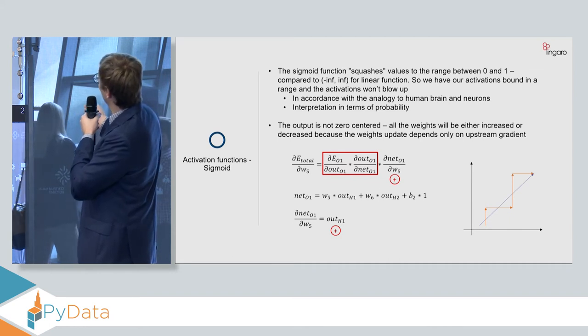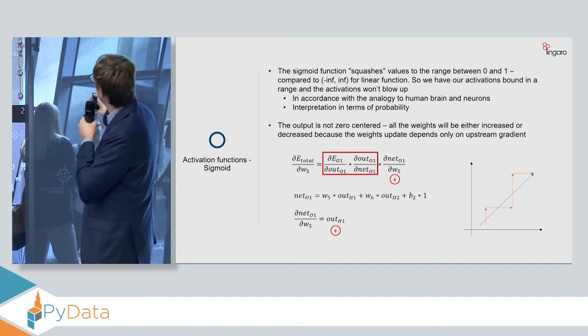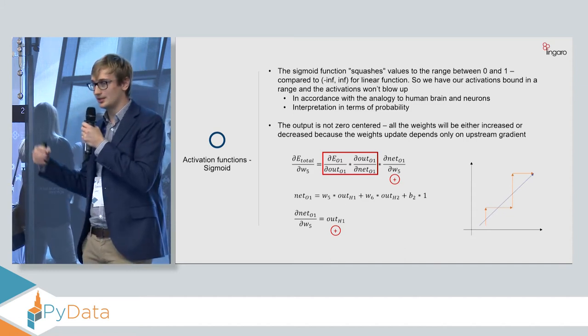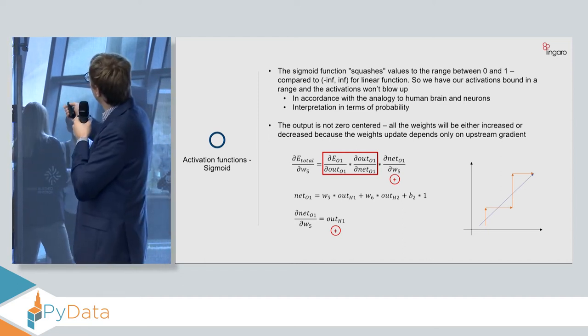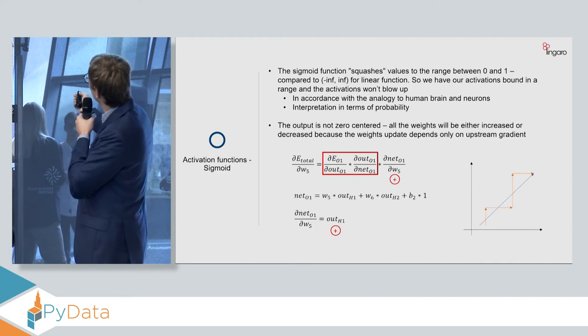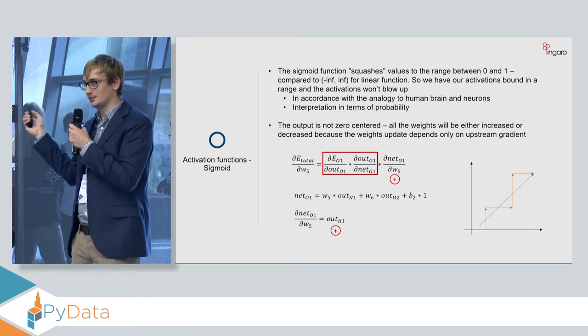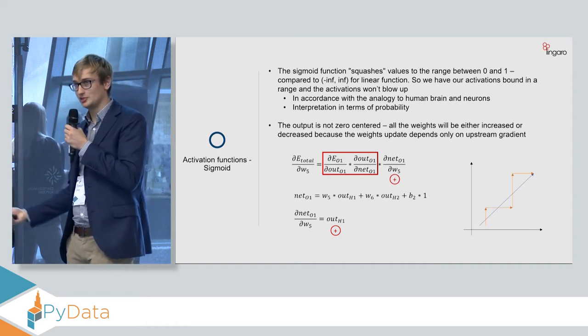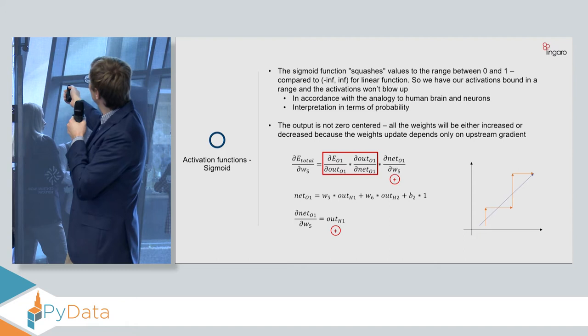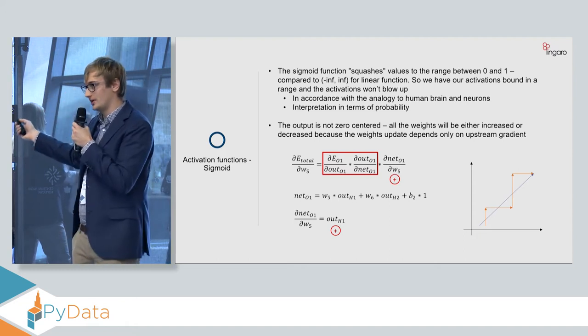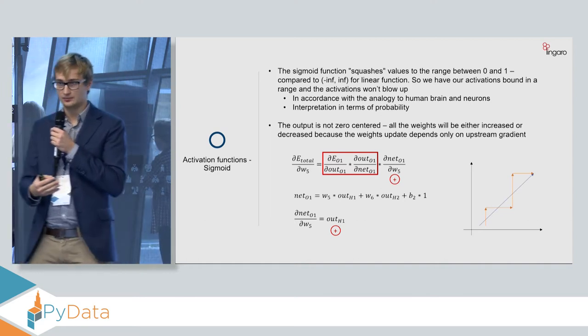So we have the output that is always in the range between zero and one. And this can lead to a suboptimal learning path. Because if our output function is always in the range between zero and one, it's always positive. And as we can see, it's a vital part of the way we calculate the influence of weight five on the error. So what's the basic thing I wanted to highlight here? This is the part that is common for all the weights. So this is the upstream gradient. So all the weights that are coming into this neuron will share this part of the equation.